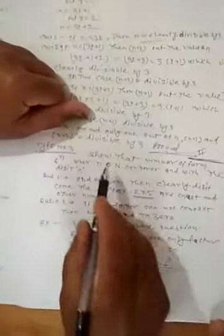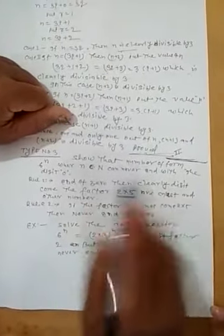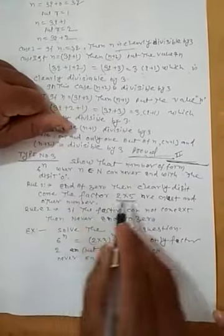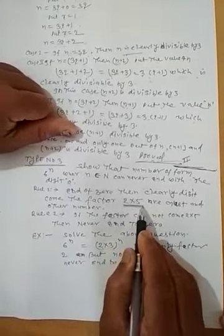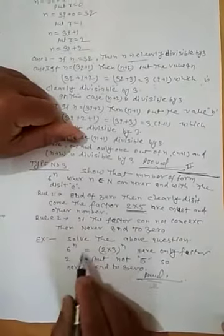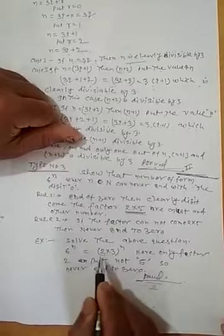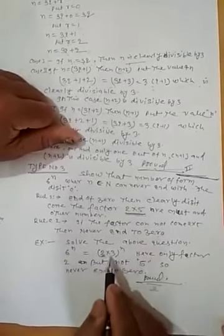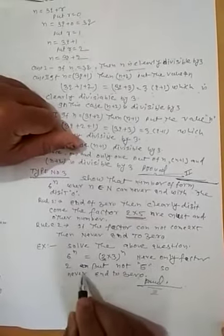Next, why a number in the form of 6 to the power n cannot ever end with 0. Because 0 requires the factors 2 and 5, but in the prime factorization of 6 to the power n, only 2 is available, not 5. So it cannot end with 0.